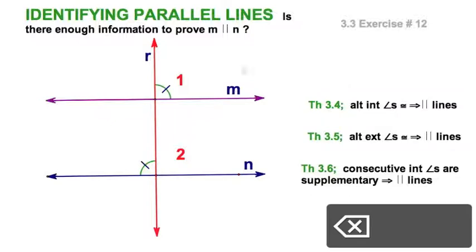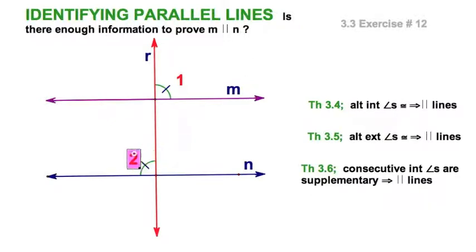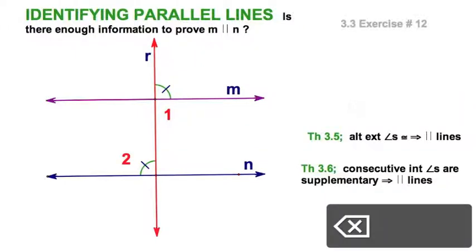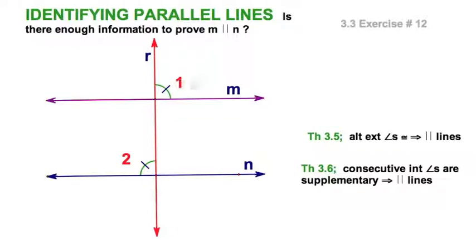How about alternate interior? Well, I guess if this were angle 2, and if these two angles were congruent, that would satisfy this theorem, and we don't have that either. How about alternate exterior angles? So, that would be these two angles, and we don't have that either.